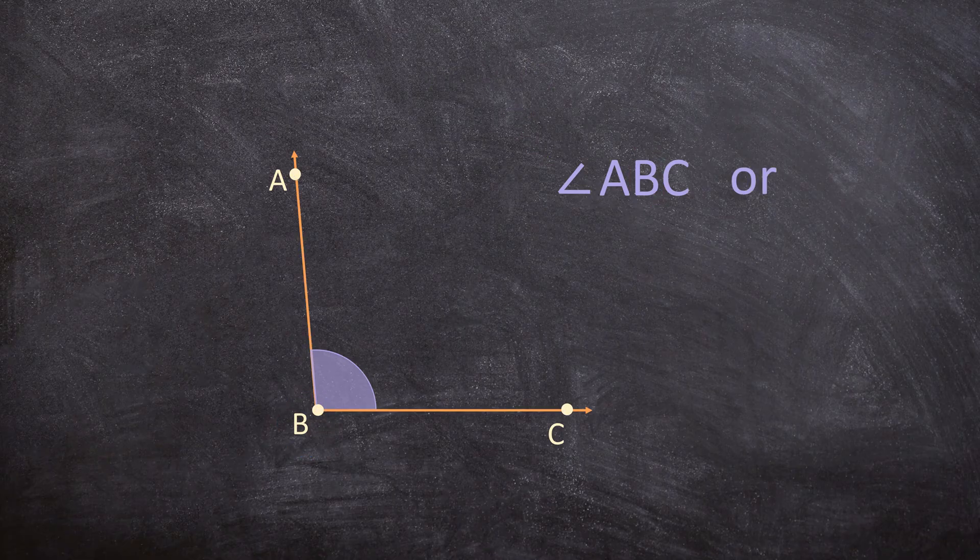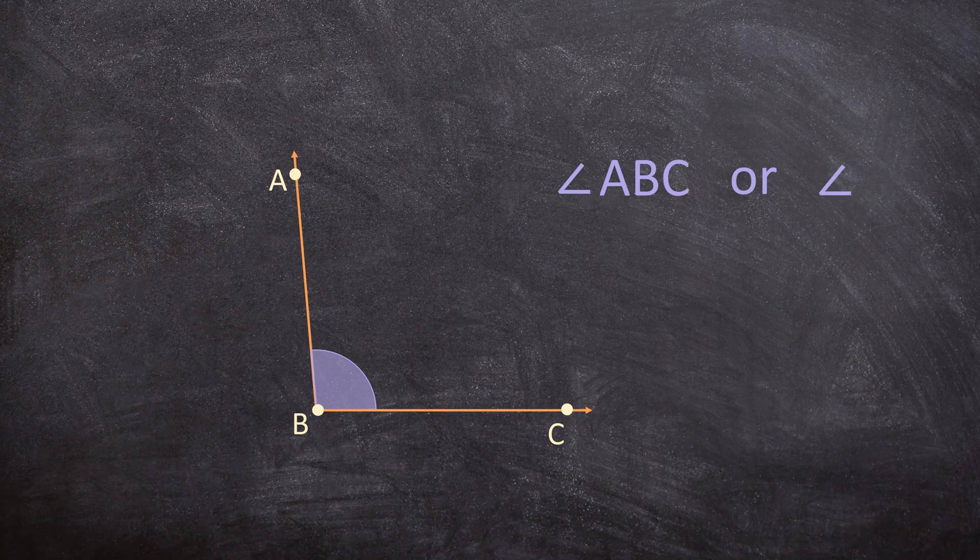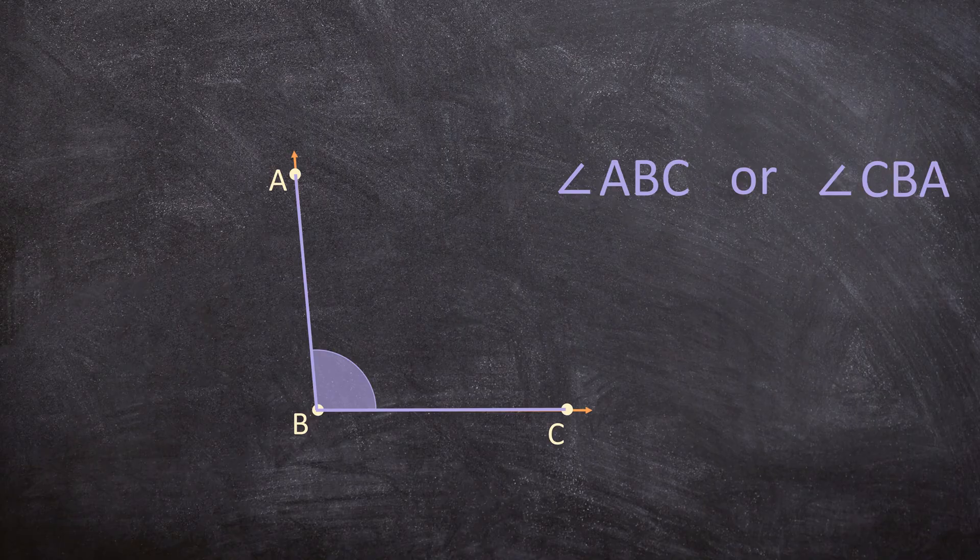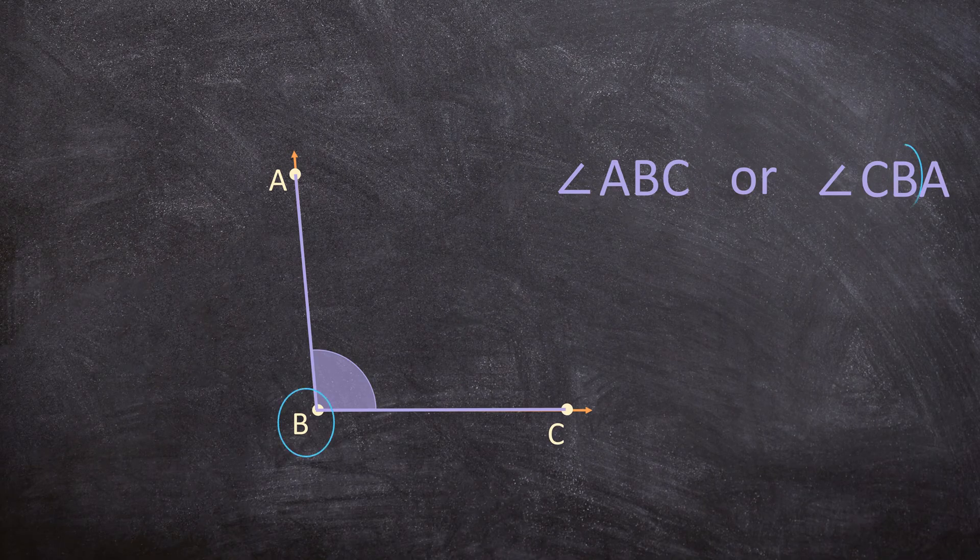But this angle can also be called angle CBA where you start at C go to B and then to A. This is also correct, both of these names are correct and the vertex is also in the middle.